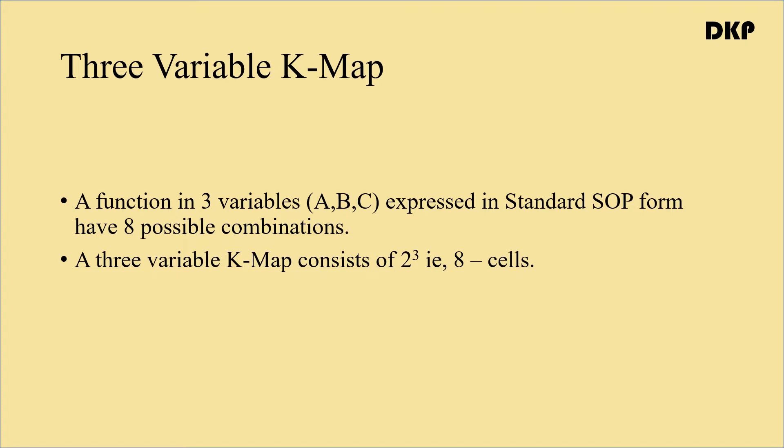Let us see what is a three variable K-map. A function in three variables expressed in standard SOP form has eight possible combinations. Suppose we have three variables — for example, A, B, C. When expressed in standard SOP, that is sum of products form, it has two to the power of three, that is eight possible combinations. Similarly, a three variable K-map consists of two to the power of three, that is eight cells.